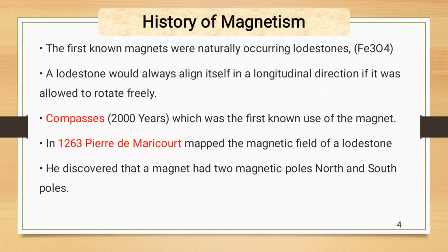Compasses, 2000 years ago, was the first known use of the magnet by the Chinese. In 1263, Perrin de Maricourt mapped the magnetic field of a lodestone. He also discovered that a magnet had two magnetic poles, North Pole and South Pole.